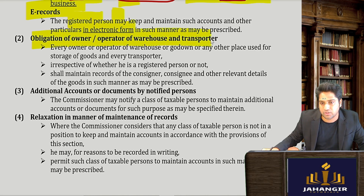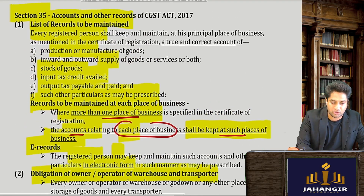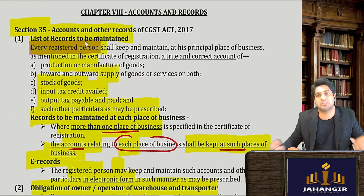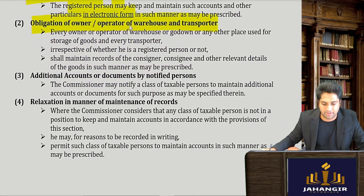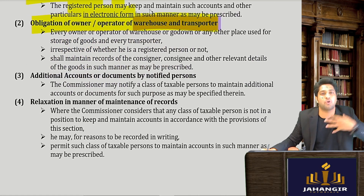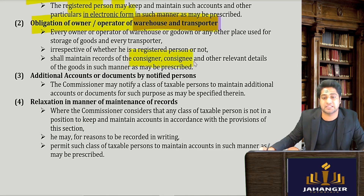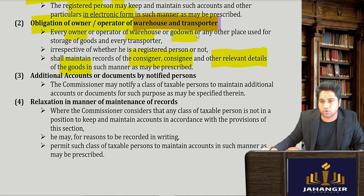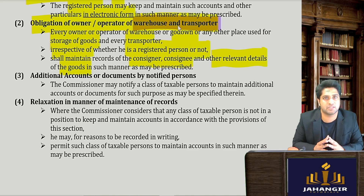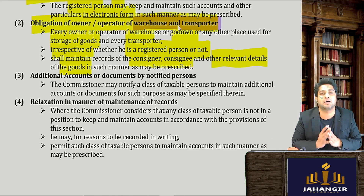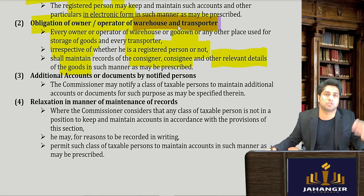Now we look at the obligation of the owner of a warehouse, operator, or transporter — the intermediaries who store goods for suppliers. They also need to maintain records. They will have to maintain a record of who is the consignor (sender), who is the consignee (receiver), who is the buyer, and other details of goods as may be prescribed. Every owner of a warehouse, godown, or any place used for storage of goods — irrespective of whether he is a registered person or not — must maintain records of how many goods are stored, for whom, and to whom they are going.